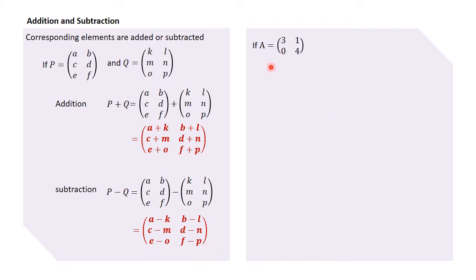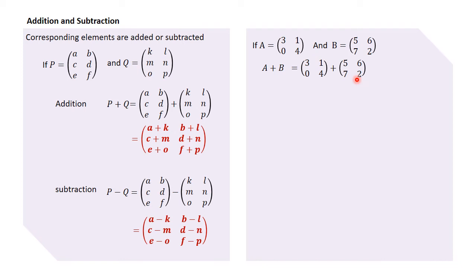Let's try an example. Say we are given matrix A which is [3, 1, 0, 4] and matrix B which is [5, 6, 7, 2], and we want to do the addition A plus B. We add the corresponding elements: 3 plus 5, 1 plus 6, 0 plus 7, and 4 plus 2. Therefore the answer will be the matrix [8, 7, 7, 6]. We have added corresponding elements.